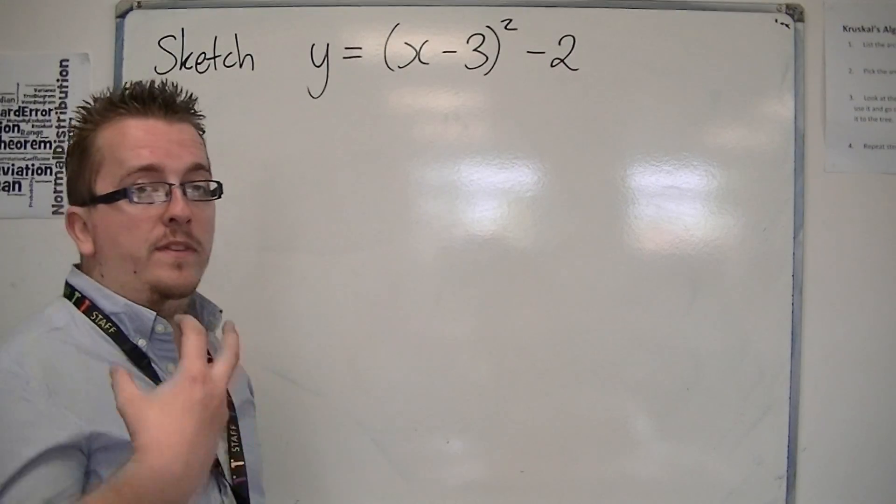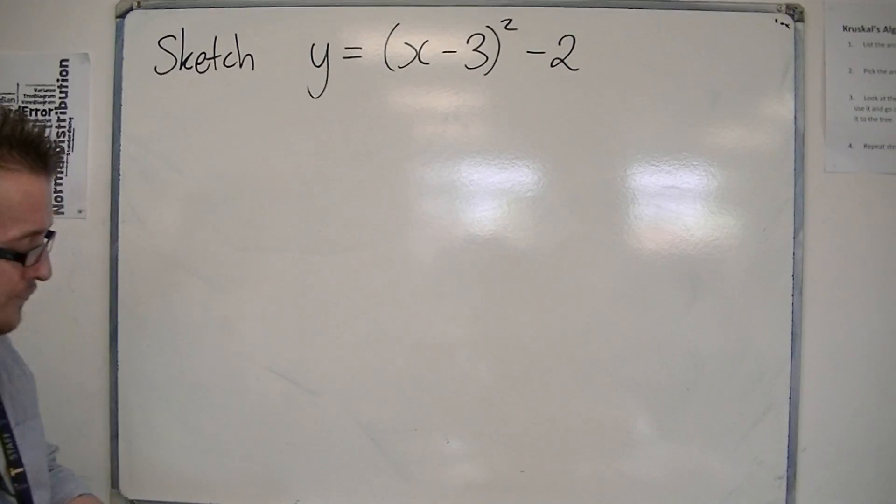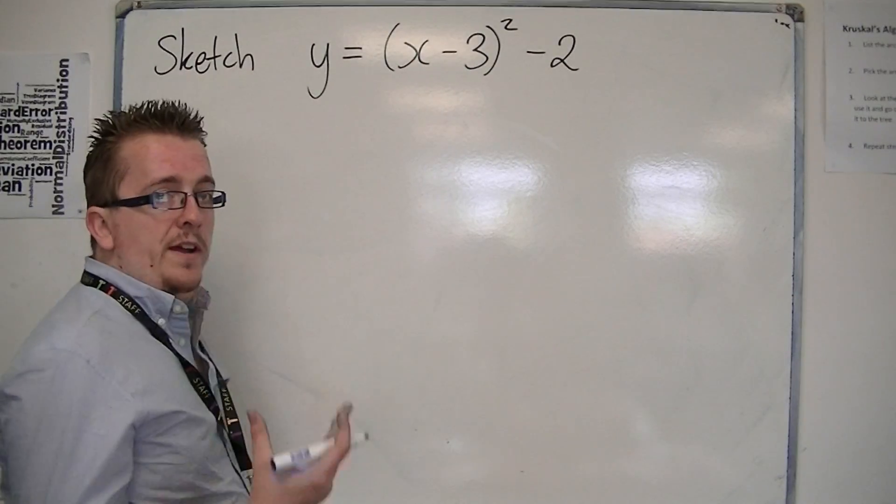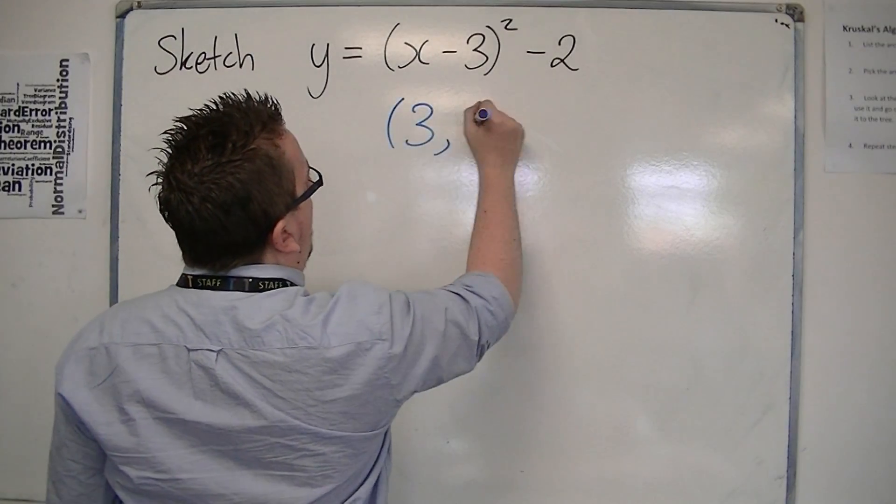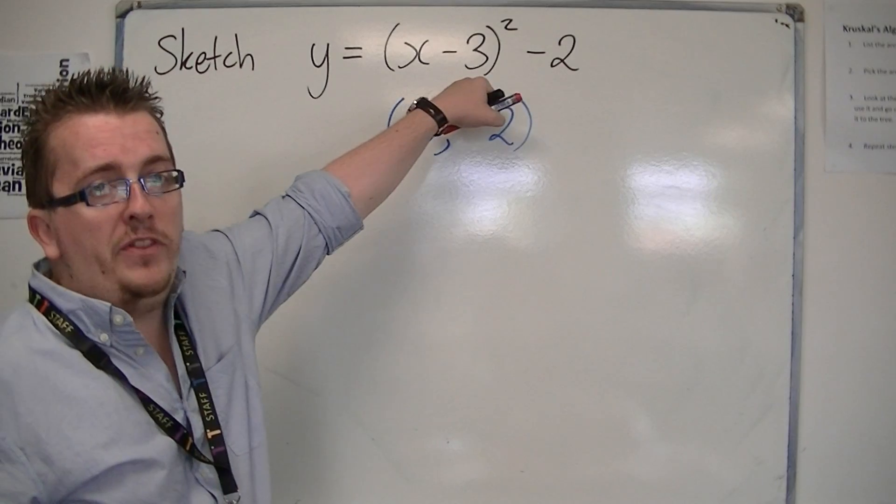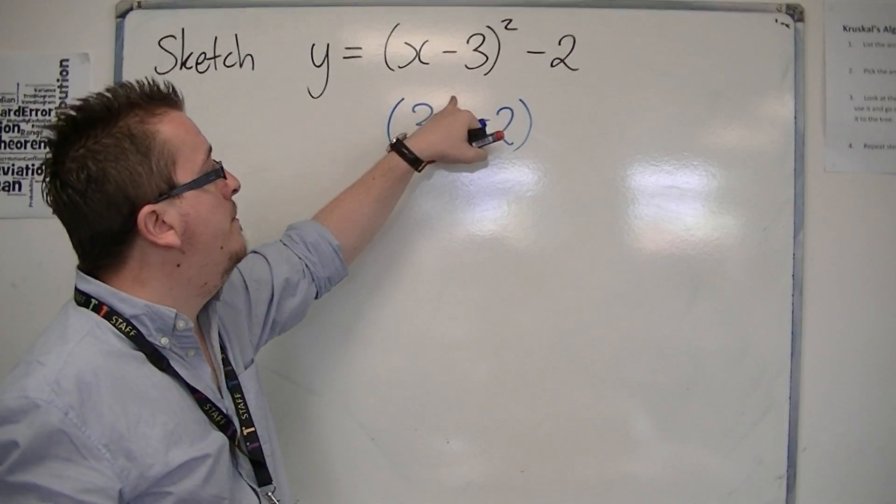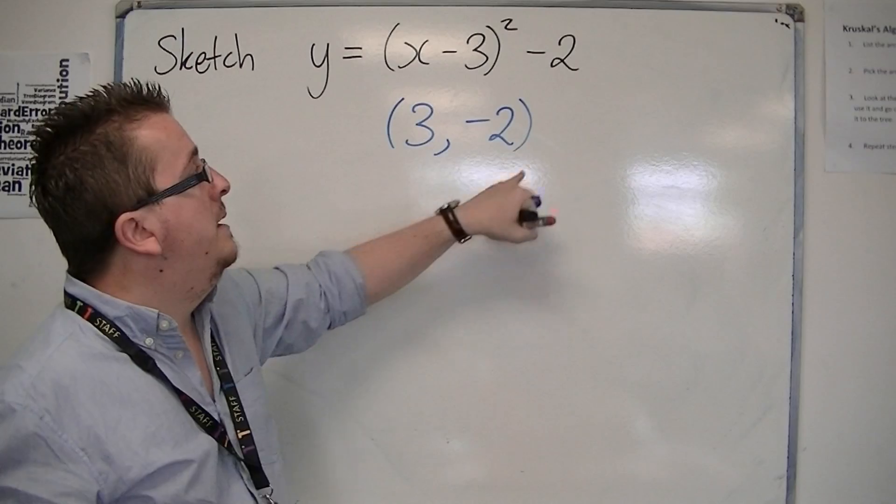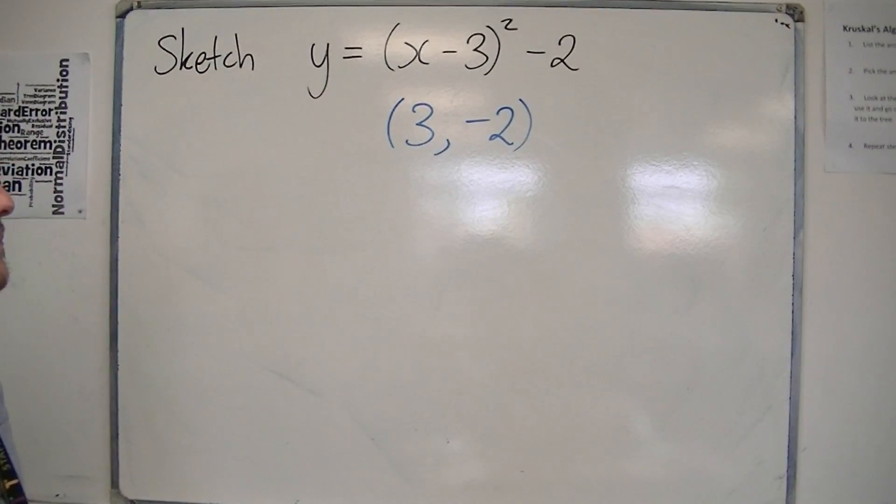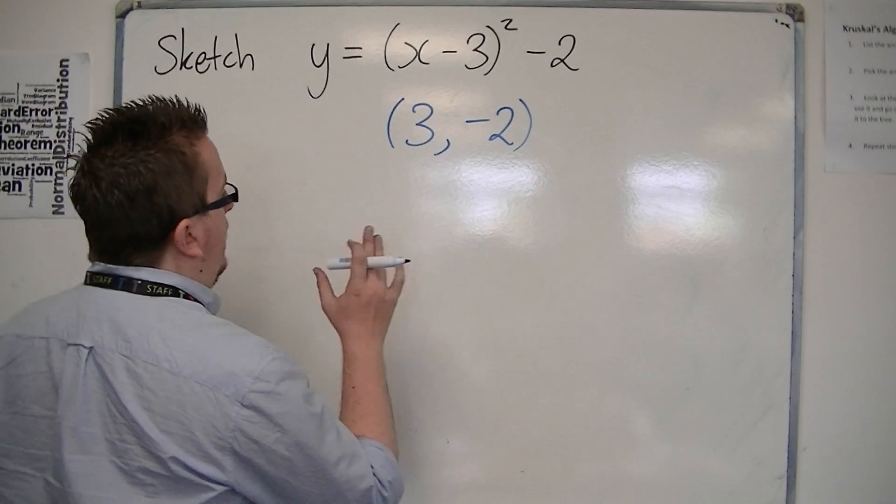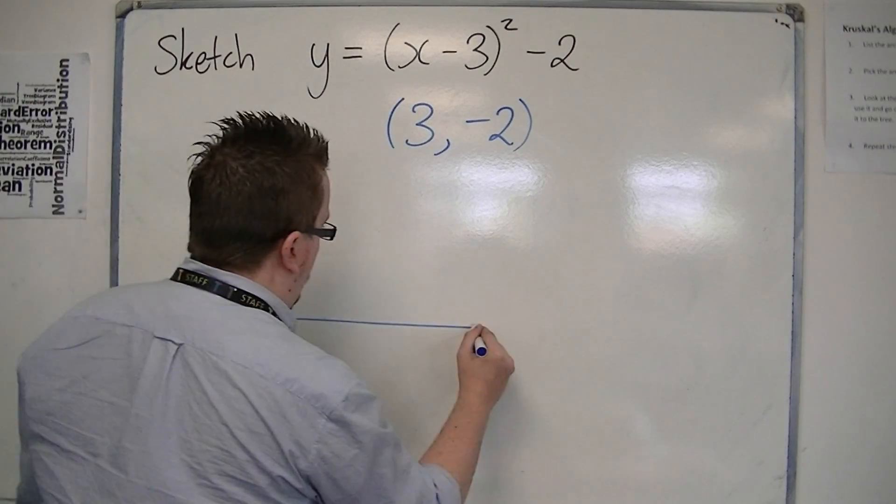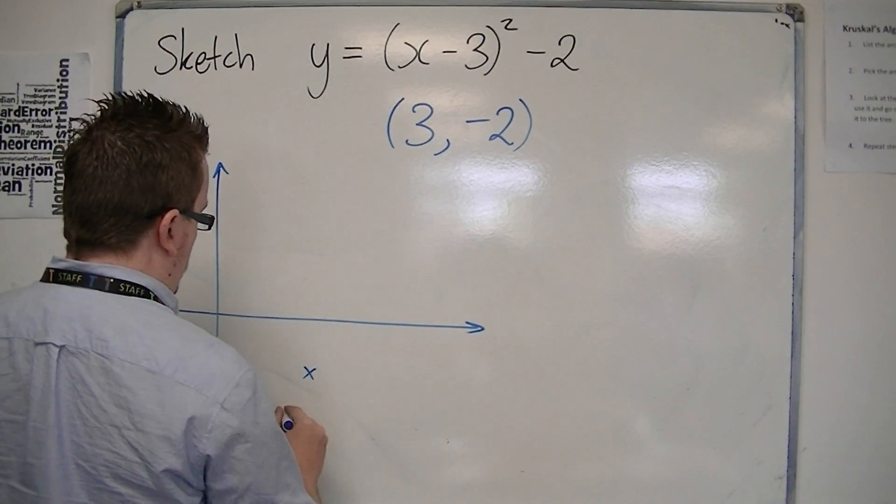Because if you add 2 to both sides, you can therefore see that it's y plus 2. So that means that this curve has a vertex at 3 minus 2. Remember, what is inside the bracket changes sign, so it becomes positive rather than negative. But the term outside the bracket remains the same. So it now goes through 3 minus 2, which is about there.